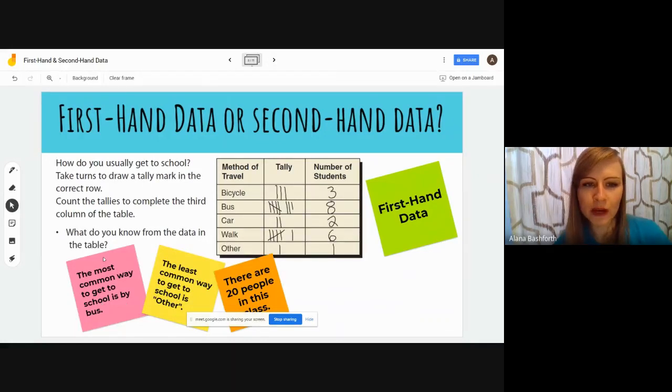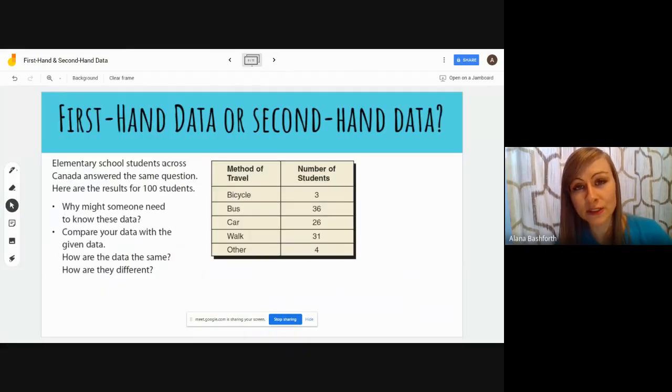To answer those questions, here are some of the things that we could have answered. I just put in some random marks that could be the answers for this. The most common way to get to school is by bus because there's eight people that take the bus in this situation. The least common way to get to school is other, and in my head that was a skateboard. Another thing that we could know is there are twenty people in this class because I added up all these numbers, I got twenty.